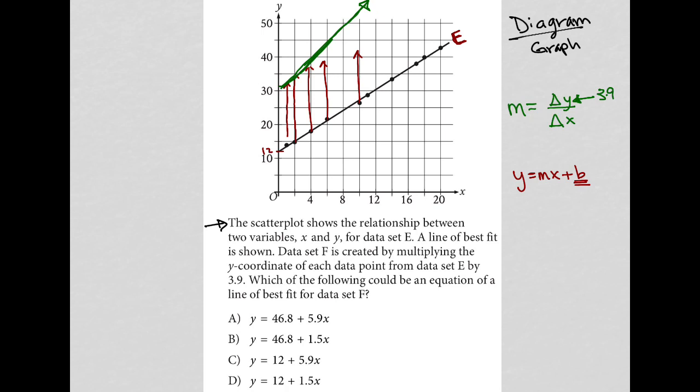So actually, my green line should actually be up around here for the Y intercept. And I can go back to my answer choices and see that choices C and D both have 12 as the Y intercept. So that's why they're gone. 12 was the Y intercept for line E. We care about line F. So those two are gone.